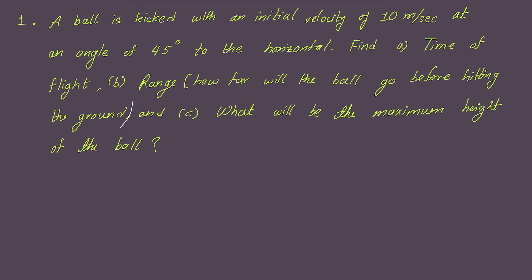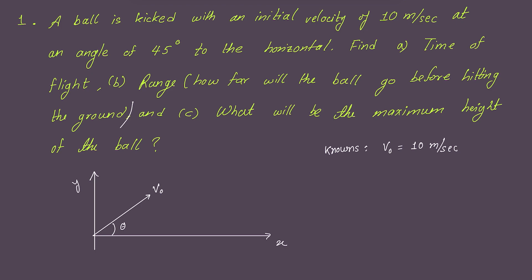A ball is kicked with an initial velocity of 10 meters per second at an angle of 45 degrees to the horizontal. We have to find the time of flight, the range (how far the ball will go before hitting the ground), and the maximum height of the ball. In these kinds of problems, I always recommend drawing the diagram first. The knowns are V₀ = 10 m/s and θ = 45 degrees.